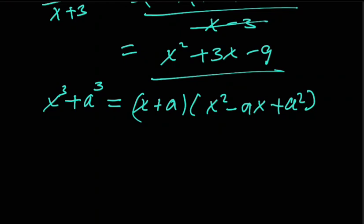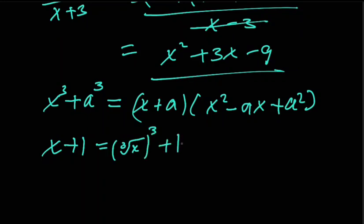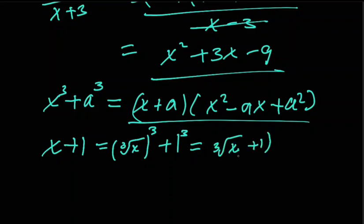Sometimes you have an expression like x plus one where you need to factorize using cube roots. You write x plus one as the cube root of x cubed plus one cubed, since one cubed is one. Applying the sum of cubes factorization, this becomes the cube root of x plus one, times the cube root of x squared minus the cube root of x plus one.